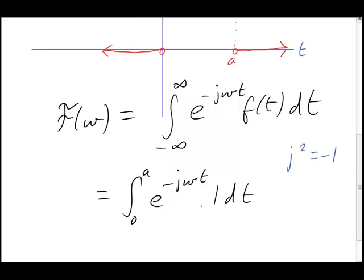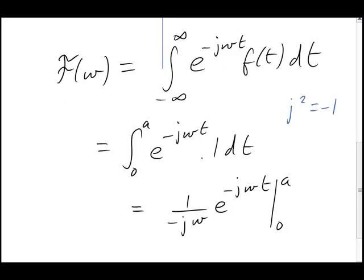The integral is now very easy to do. Don't be upset by the presence of an imaginary unit j in that exponential. It's still just an exponential, and we'd integrate it in exactly the same way as we always would. We get the same exponential divided by the coefficient of t, which is here, negative jω. All that remains is to put in the upper and lower integration limits and do the subtraction. Remember, e to the 0 is 1, so we get the following.